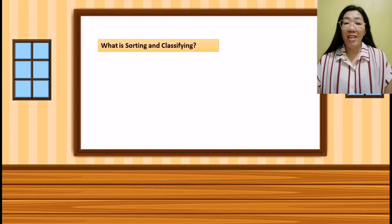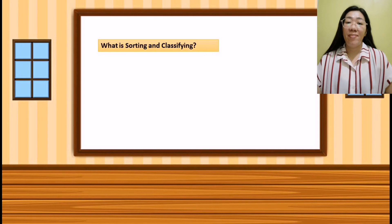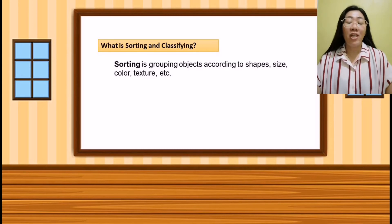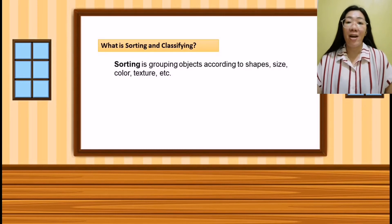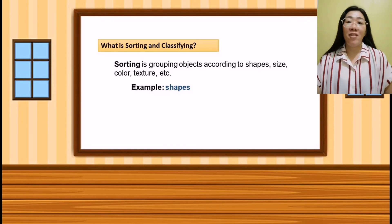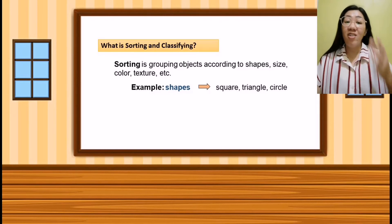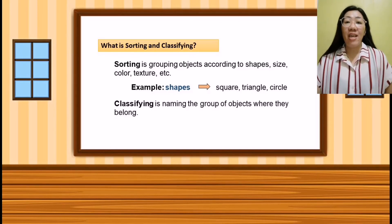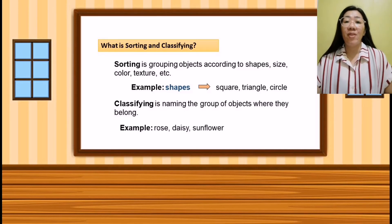Now, what is sorting and classifying? Sorting is grouping objects according to shapes, size, color, textures, and etc. For example, shapes — what are examples of shapes? We have square, triangle, and circle. They are shapes. Furthermore, classifying is naming the group of objects where they belong. For example, rose, daisy, and sunflower are classified as flowers.